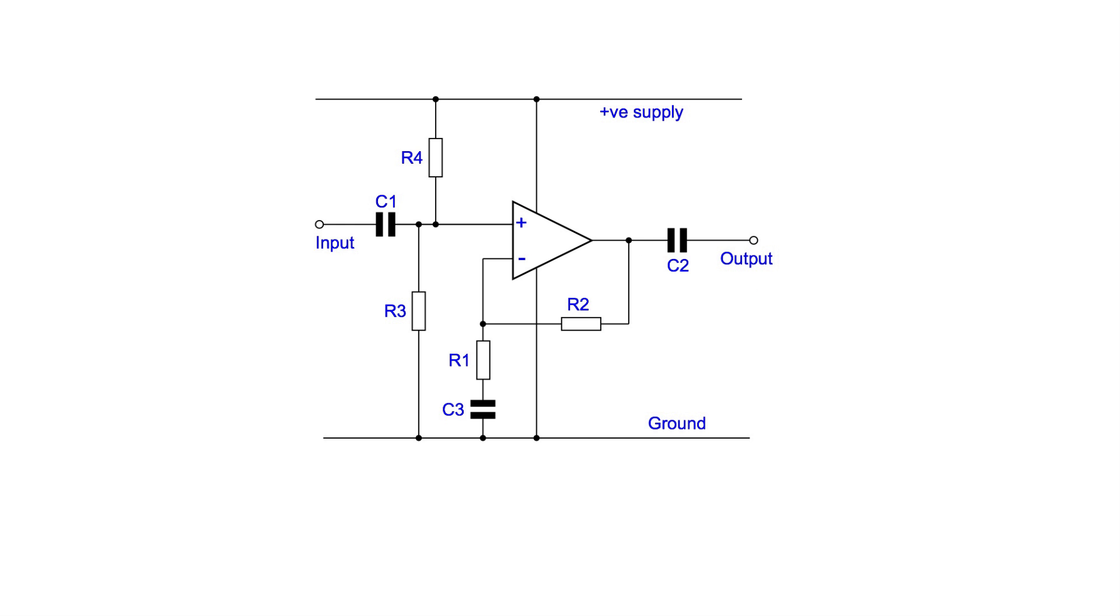You can also run the circuit from a single supply by creating a half supply point. It then looks to the op-amp as if it actually has its plus and minus supplies. R3 and R4 form a potential divider to create the half supply voltage. They're normally the same often around 10k or possibly a bit more. As the input and output will be sitting at half the supply you'll need input and output capacitors as we saw before.